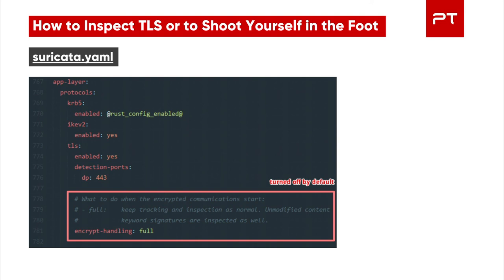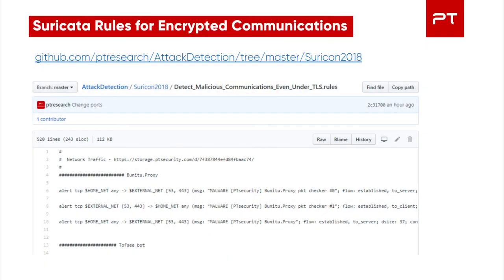In case of contentless rules, Suricata has to inspect the parameters of all packets without multi-pattern matching (MPM). And for TLS, there is an additional restriction — it doesn't get inspected by default. We can eliminate this restriction with a specific setting in the Suricata.yaml configuration file. As you can see, it is possible and, by the way, very interesting to detect encrypted malware communication using Suricata.